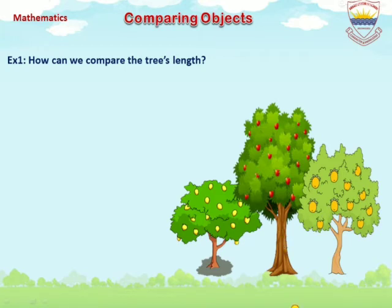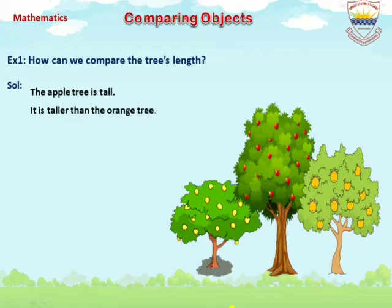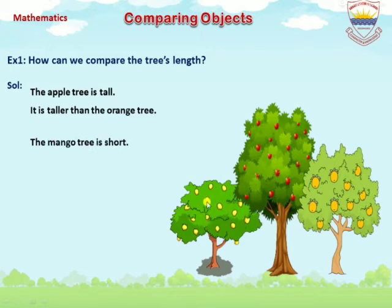Solution: The apple tree is tall. As you see in the picture, the apple tree is tall. It is taller than the orange tree. The mango tree is short. Look at the picture — the mango tree is shorter than the other trees. It is shorter than the orange tree.